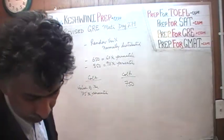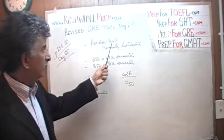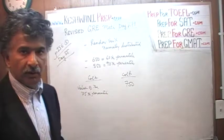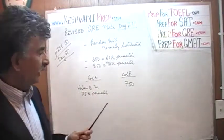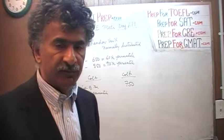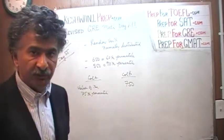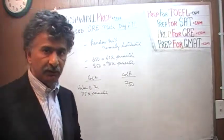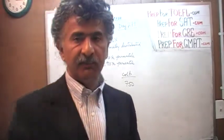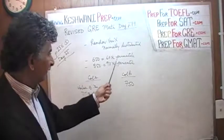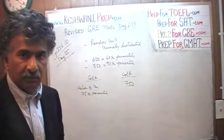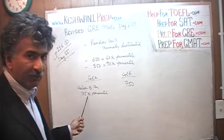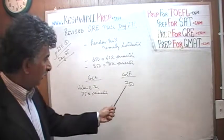Here's what is given for problem number 5. We have a random variable X which is normally distributed. We are told that the 60th percentile is the value 650, and the 90th percentile is the value 850 — meaning 90% of all observations fall below 850, and 60% fall below 650. The question simply is: how does the value of the 70th percentile compare to 750?